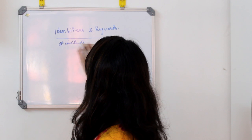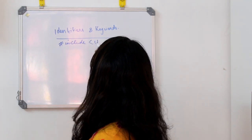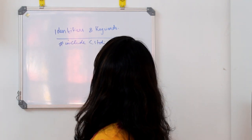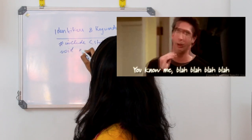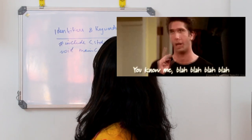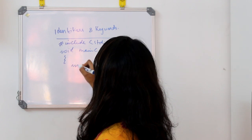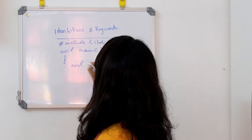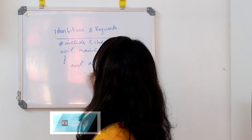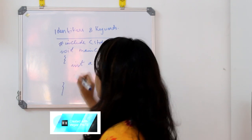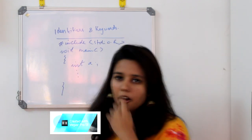Hash include stdio.h — that is the format. Void main. So, I am going to declare a few statements.